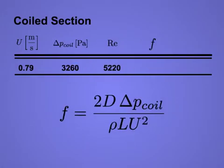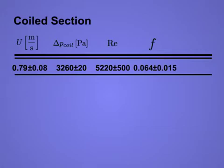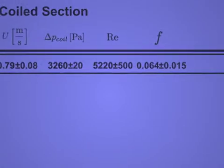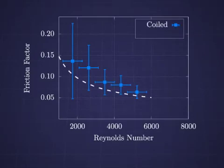Use the remaining pressure drop and your measurement of the coil radius to determine the friction factor in the coiled portion. Propagate uncertainties for the Reynolds number and friction factor once again, assuming negligible uncertainty from the correction for the straight section. Plot these results along with the model prediction for a coiled section.